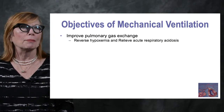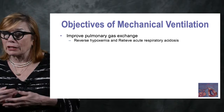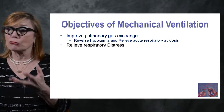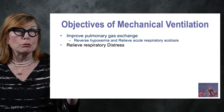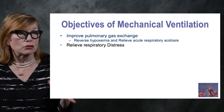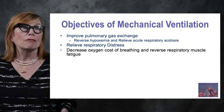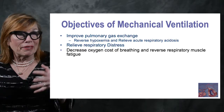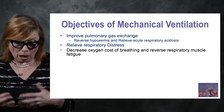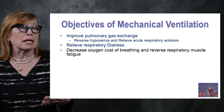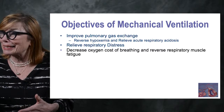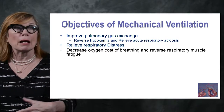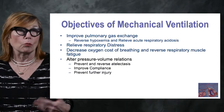Our objectives for mechanical ventilation are: number one, to improve gas exchange — oxygen uptake into the blood and CO2 removal; to relieve respiratory distress; to decrease the work of breathing and reduce the respiratory rate, or at least support the respiratory rate when a patient is compensating for metabolic acidosis. Decrease the cost of breathing — when the diaphragm contracts and accessory muscles work, blood flow is directed to those muscles because that muscular activity requires so much oxygen. We want to reverse that muscle fatigue.